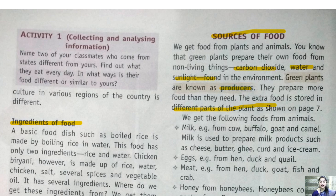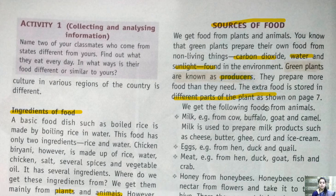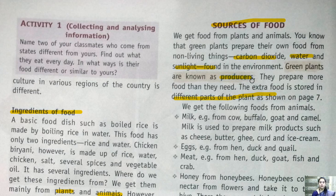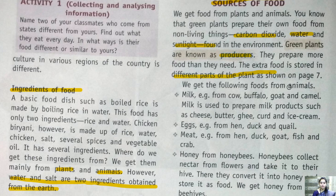The extra food is stored in different parts of the plant — in the fruit, seed, leaves, and so on. As plants grow and mature, they give us vegetables, fruits, and spices to eat. So plants prepare their own food through photosynthesis, gain energy, grow, and then produce fruits, vegetables, and different types of spices that we use as ingredients.